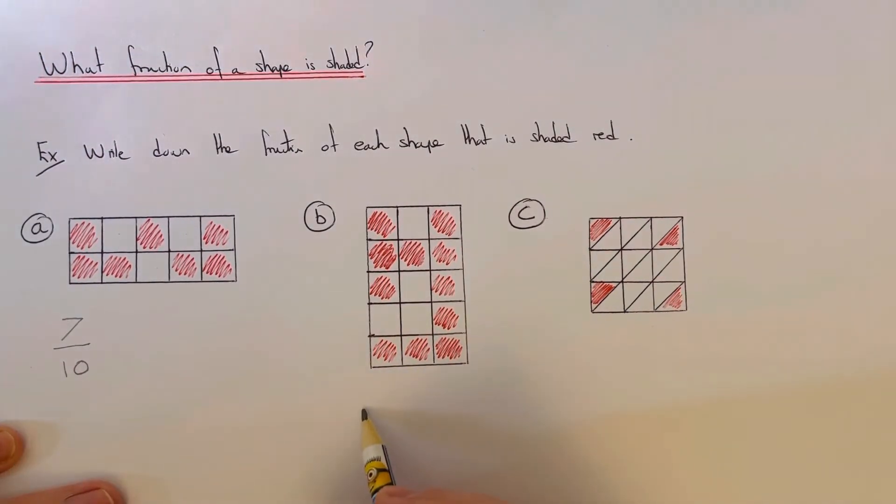Again, we just need to count how many squares are shaded red, and we put that on the numerator. So we've got one, two, three, four, five, six, seven, eight, nine, ten, eleven.